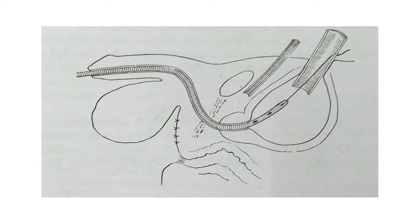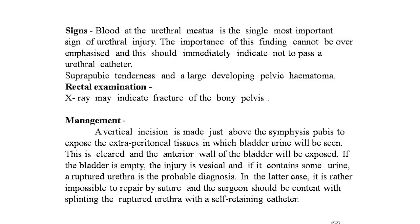Blood at the urethral meatus is the single most important sign of urethral injury; the importance of this finding cannot be overemphasized and should immediately indicate not to pass a urethral catheter. Other signs include suprapubic tenderness and a large developing pelvic hematoma. Rectal examination and X-ray may indicate fracture of the bony pelvis.